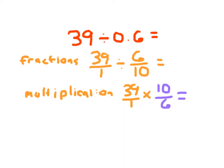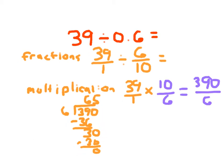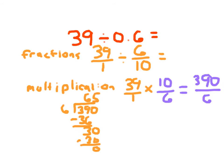So instead of 6 tenths, we have 10 over 6. Now we just solve that multiplication problem. 39 times 10 is 390, and in the denominator, I have 1 times 6, which is 6. The 390 over 6 can also be read as 390 divided by 6. I set up that division problem and solve it. 30 divided by 6 is 5, 5 times 6 is 30, and 30 minus 30 is 0. No remainder. So 65 is my answer.